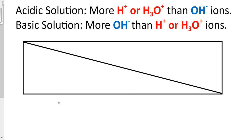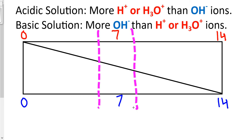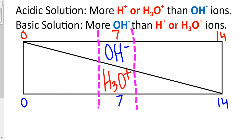When we have a solution that has a pH of 7 — with 0 on the left, 7 in the middle, and 14 on the right — any solution with a pH of 7 has the same number of hydroxide and hydronium ions. It has an equal number of hydroxide and hydronium ions, and that's why the solution is neutral, neither acidic nor basic.